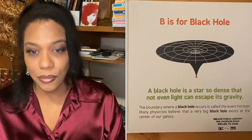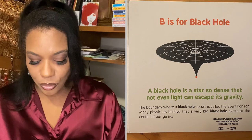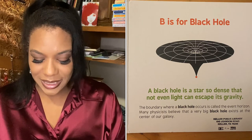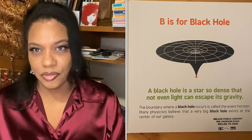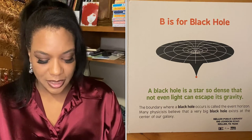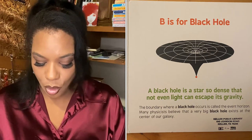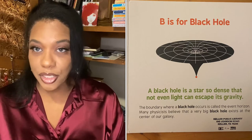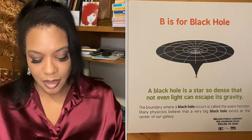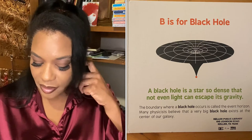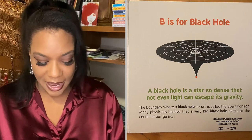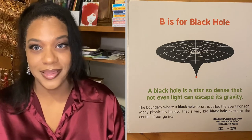B is for black hole. A black hole is a star so dense that not even light can escape its gravity. The boundary where a black hole occurs is called the event horizon. Many physicists believe that a very big black hole exists at the center of our galaxy.